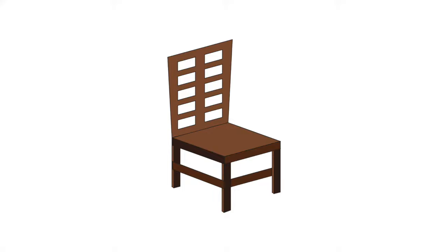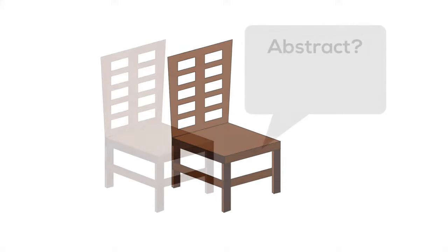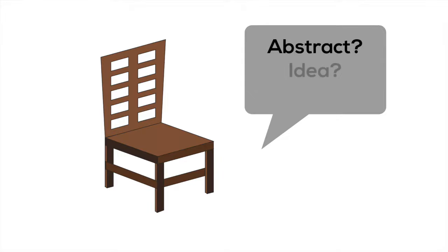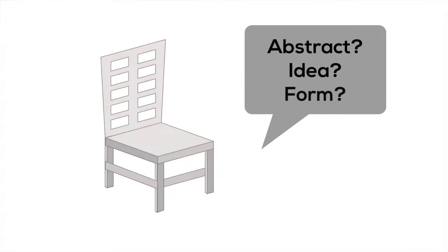For example, the chair you sit in is a real, tangible chair. It is an instance of a chair. But if I were Plato, I might ask you, what is a chair in the abstract? What is the form of a chair? What is the idea behind a chair? Describe a chair such that its properties are untethered from any one particular instance of a chair, and it stands alone as an abstract idea.